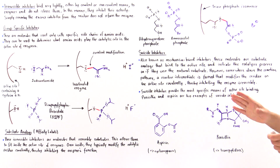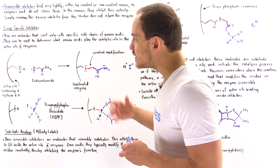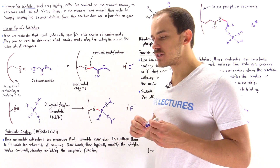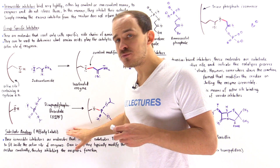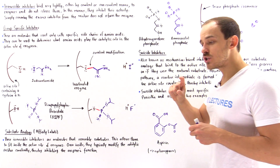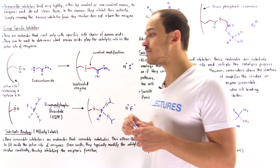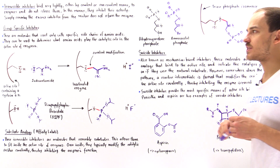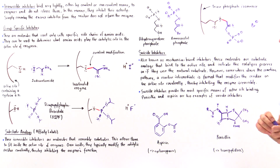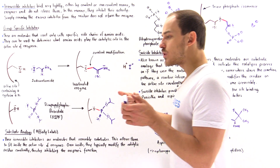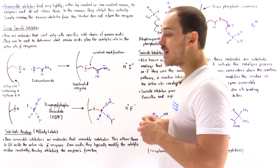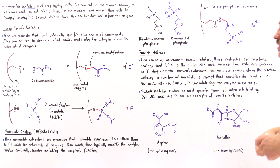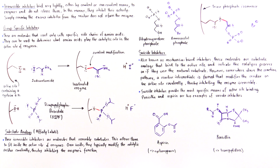To summarize, the three types of irreversible inhibitors are: group specific inhibitors, which bind to specific residues or amino acid groups; substrate analogs (affinity labels), which resemble the natural substrate and fit into the active site to covalently modify it; and suicide inhibitors, which enter the active site and begin normal catalysis, but generate a reactive intermediate somewhere along the reaction pathway that covalently modifies the catalytic residue and irreversibly inhibits the enzyme.